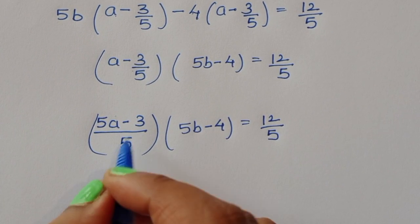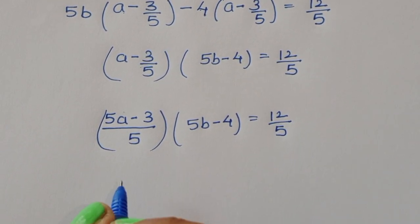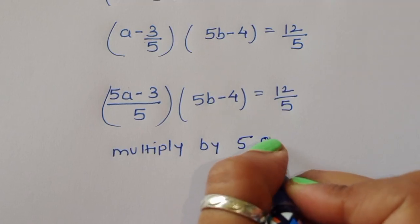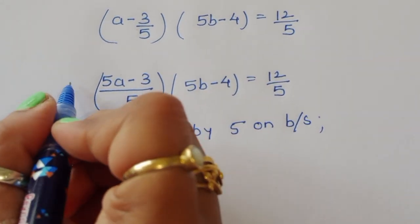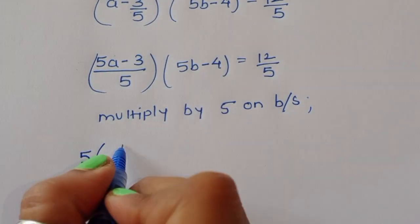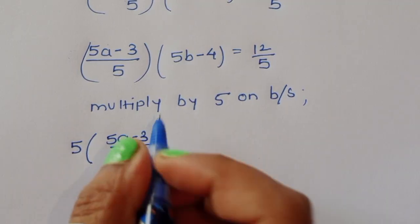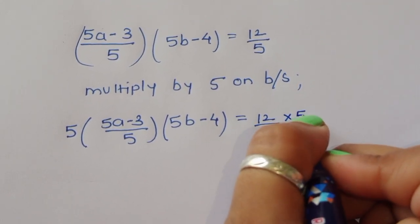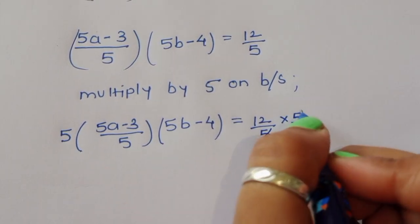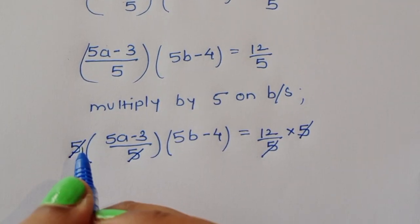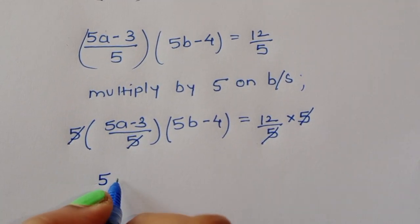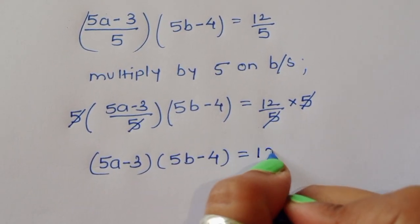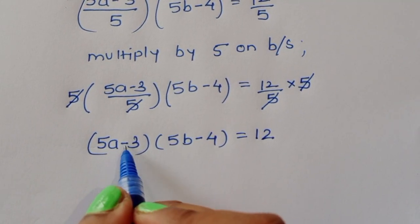We multiply both sides by 5 to clear the fraction. So 5 times (a - 3/5) times (5b - 4) = 12. The 5 cancels, giving us (5a - 3)(5b - 4) = 12. We now have two factors whose product is 12.